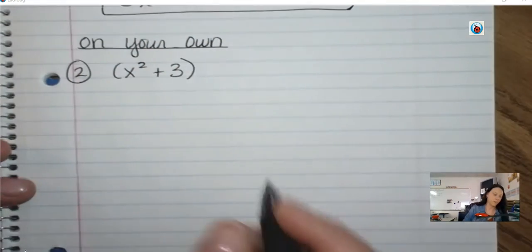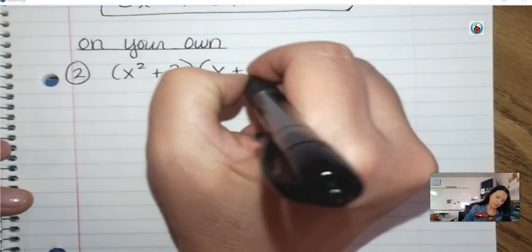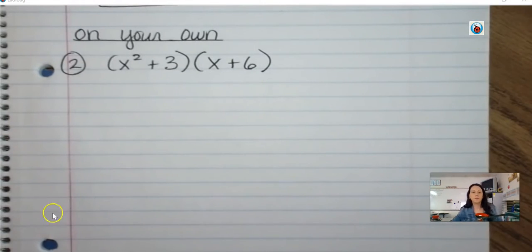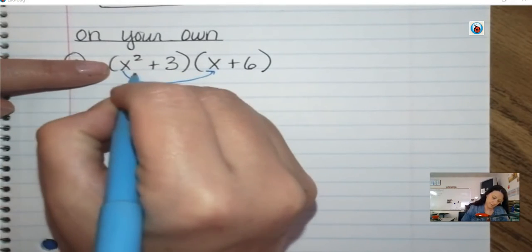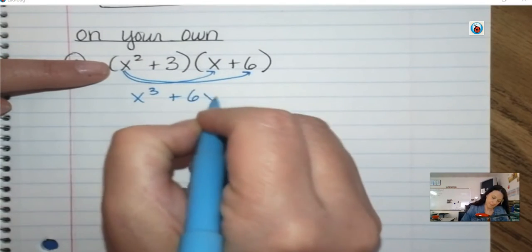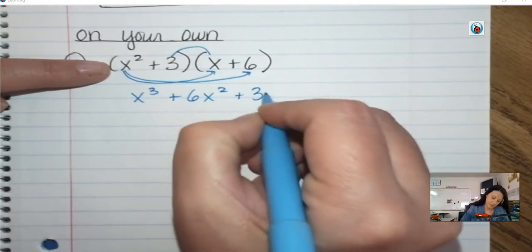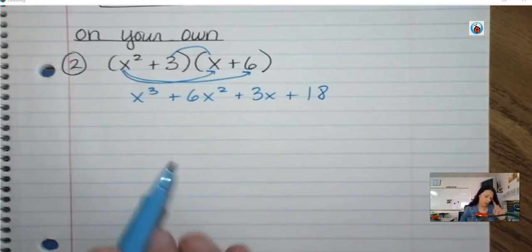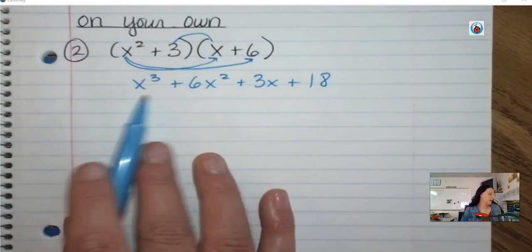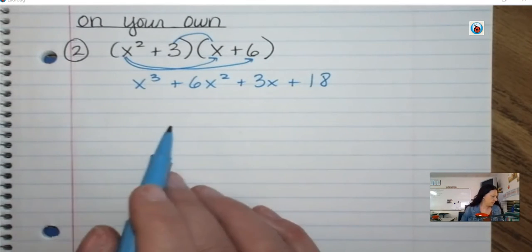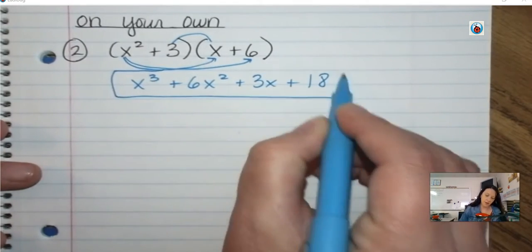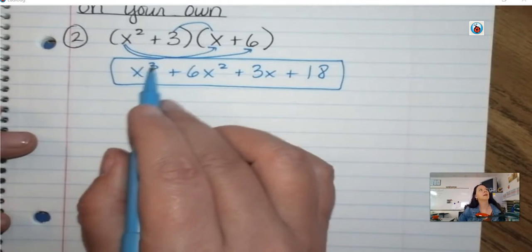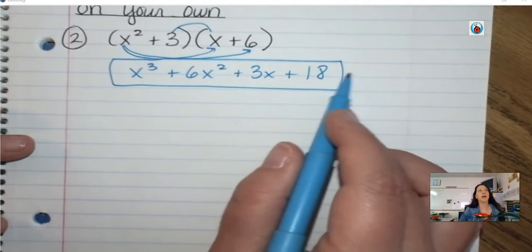Now do some on your own: x squared plus 3 times x plus 6 — go ahead and multiply those. Check your answers: x cubed plus 6x squared plus 3x plus 18. There's nothing to combine — x cubed does not go with x squared, does not go with an x, and obviously doesn't go with a constant.